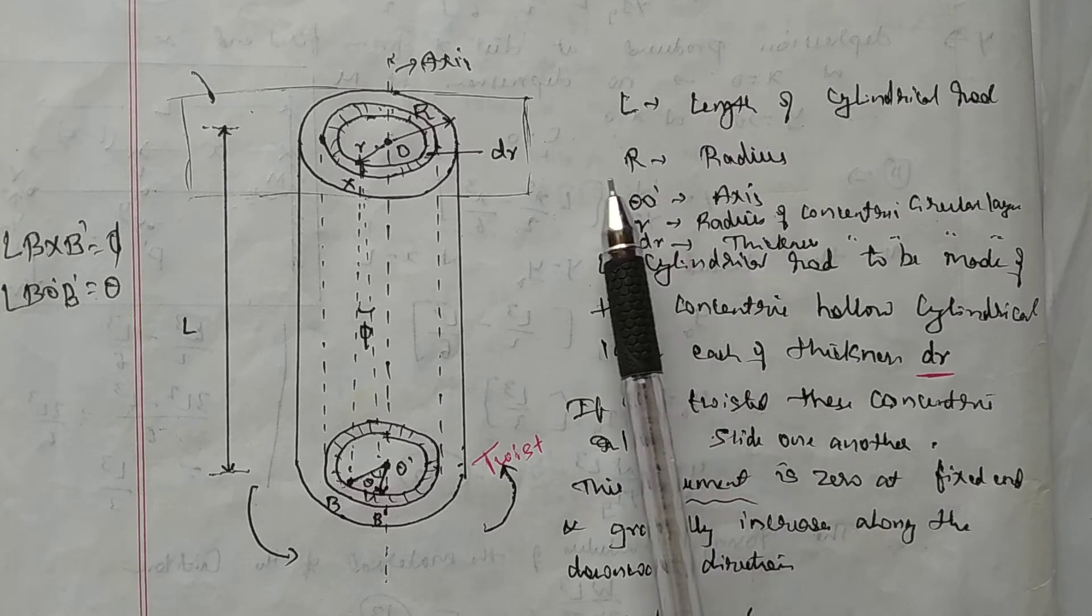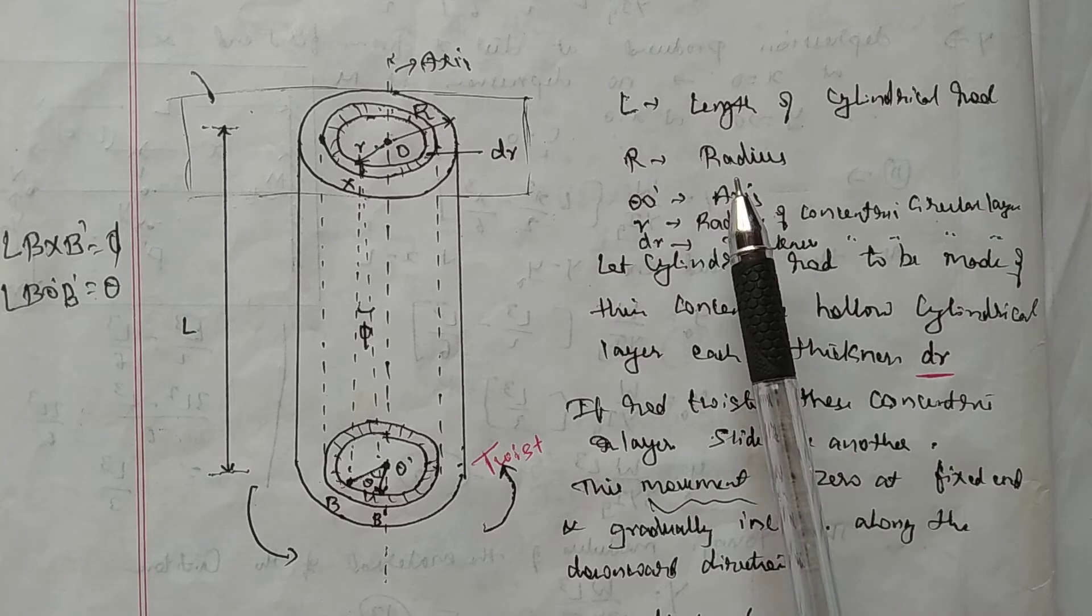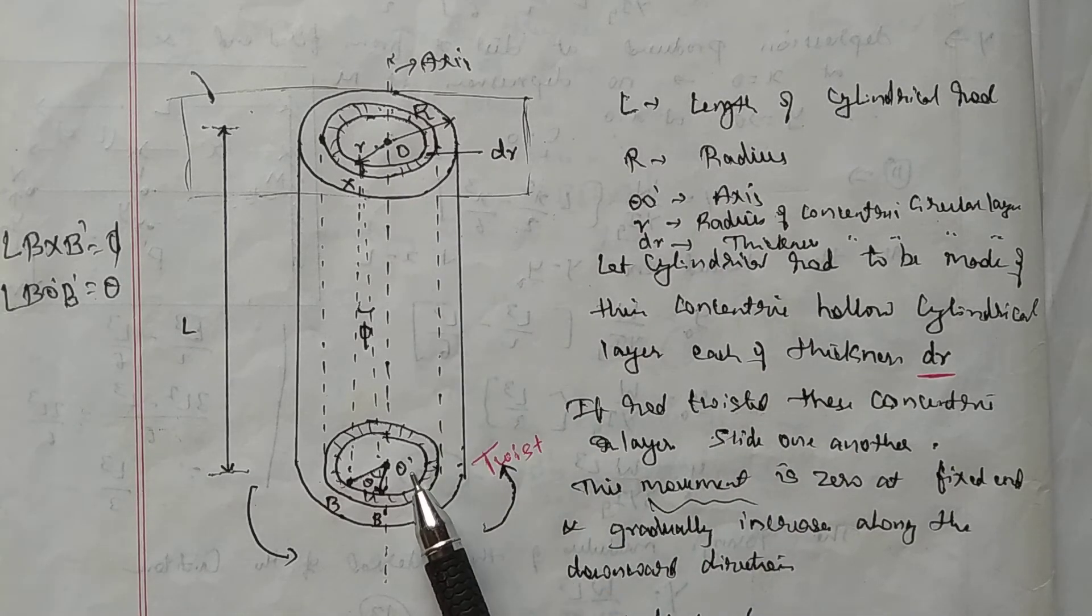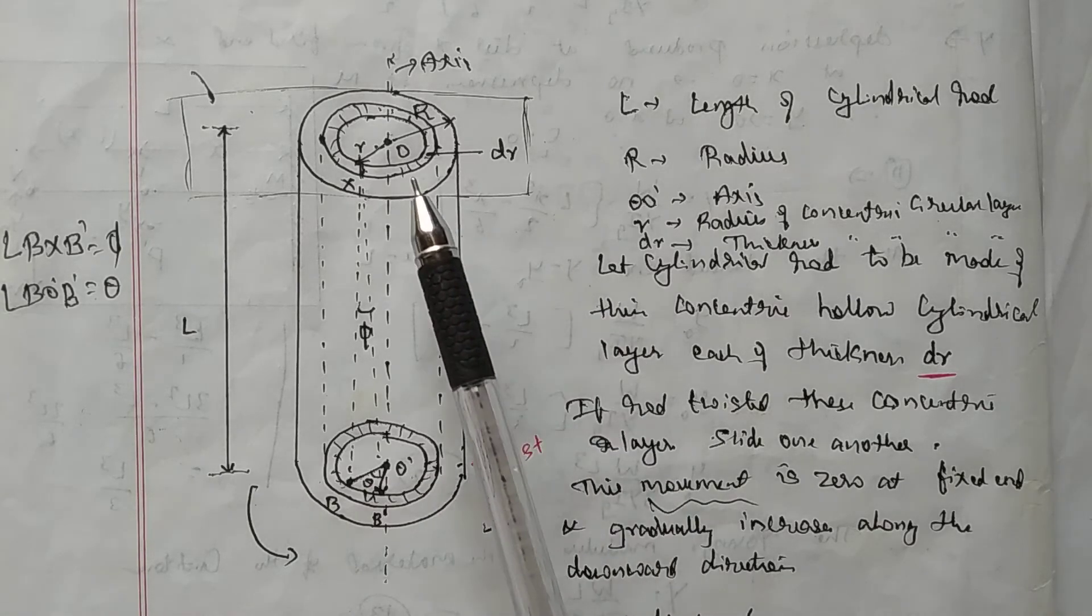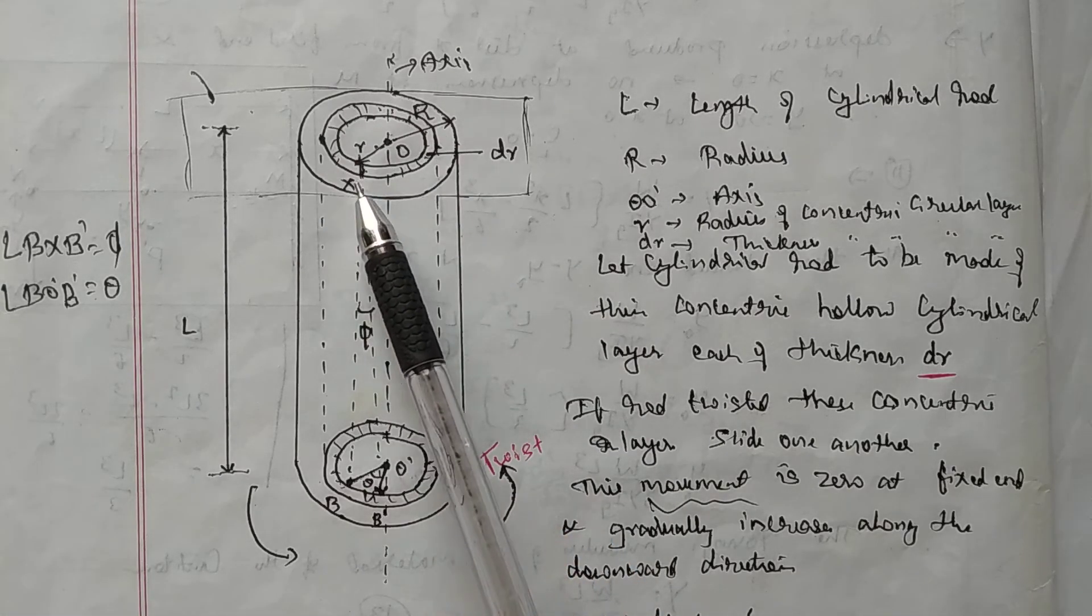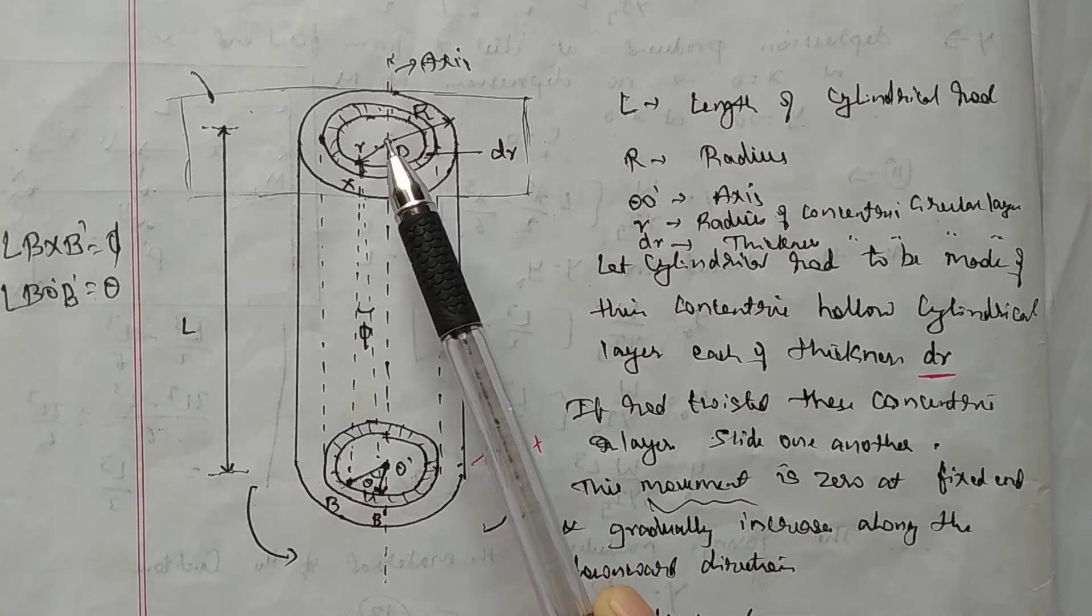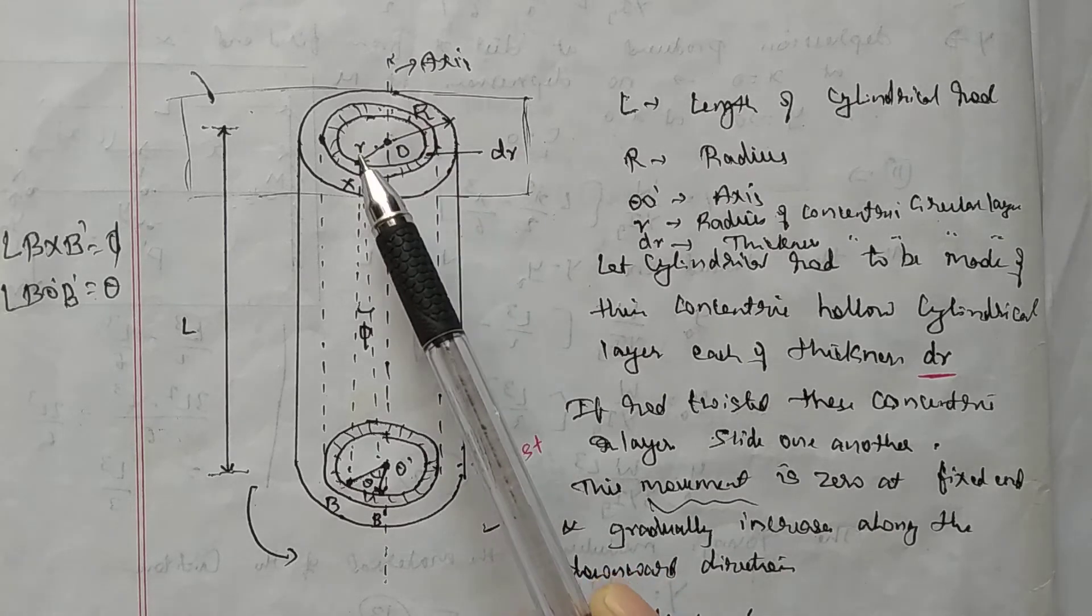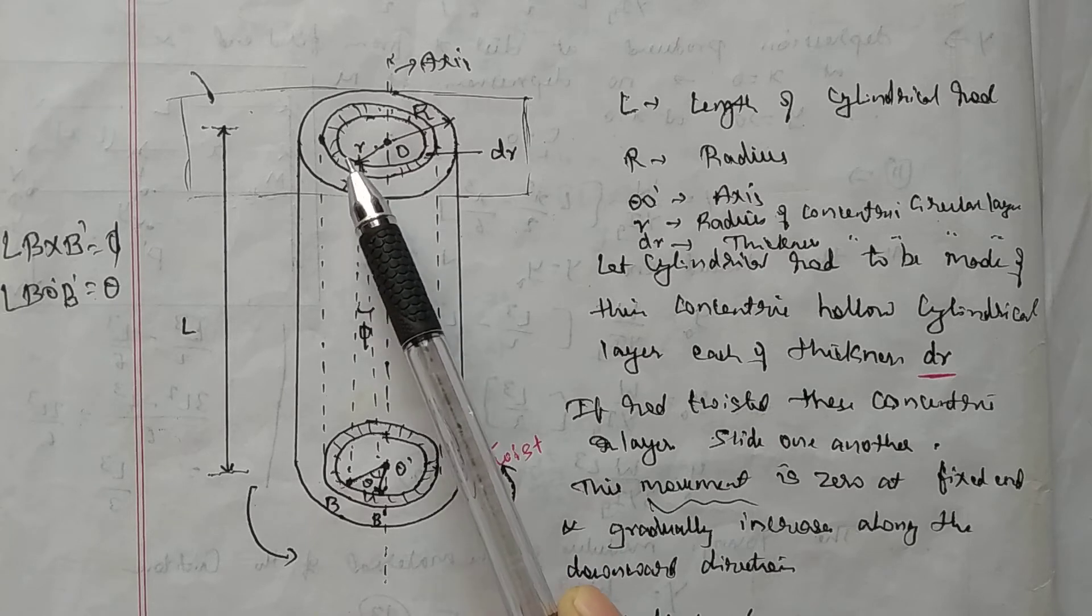Let R be the radius of the cylindrical rod. OO dash is the axis, and let us imagine that this cylindrical rod is made up of small concentric hollow cylindrical layers of radius small r and of thickness dr.